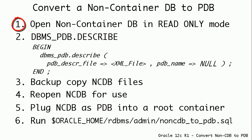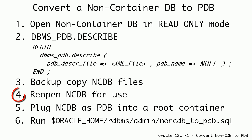First, we have to open the non-container database in read-only mode. Then we can use the dbms_pdb.describe procedure, which accepts two parameters: the XML file name along with path, and the PDB name. This procedure will create an XML file containing all the details about the non-container database. Then we have to copy the data files and temp files to a temporary folder. Optionally, we can reopen the non-container database for use. Now we can take the data files and XML file and plug it into a root container as a pluggable database. Finally, we have to run a script to convert the non-container database to PDB, which will clean up the database to make it a pluggable database.